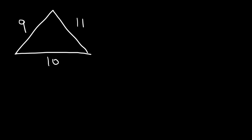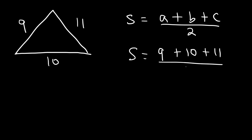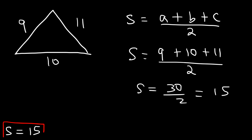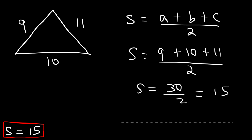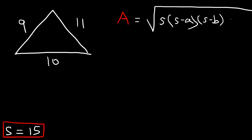Now let's try one more example. This time we're going to have a triangle with three different sides — side, side, side — with sides 9, 10, and 11. What can we do to find the area? There's something called Heron's formula. To apply it, you need to find S, which is one-half of the perimeter: S equals A plus B plus C divided by 2. So we add 9, 10, and 11, then divide by 2. 9 plus 10 is 19, 19 plus 11 is 30, and 30 divided by 2 is 15. So S equals 15. The area formula is the square root of S times (S minus A) times (S minus B) times (S minus C).